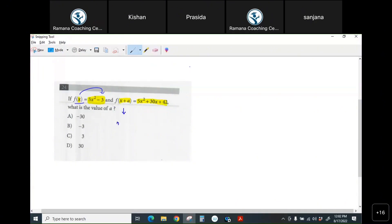So 5 times, instead of x, you are plugging in what? (x+a)² minus 3. Correct, that's the definition of f(x+a), right? It equals, on the right side, he said 5x² + 30x + 42.